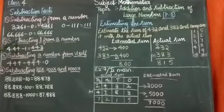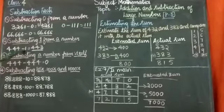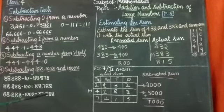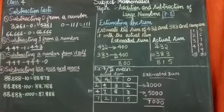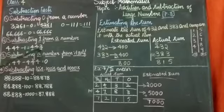The second fact is subtracting 1 from a number. When we subtract 1 from a number, we get the predecessor of that number. Here I have 444. Subtracting 1, I get 443. So 444 minus 1 gives you 443. This is nothing but the predecessor of 444.